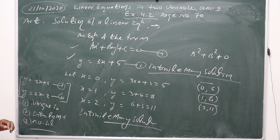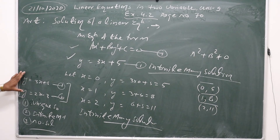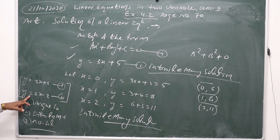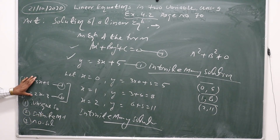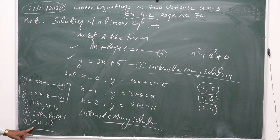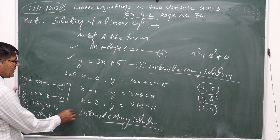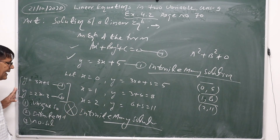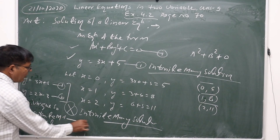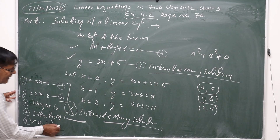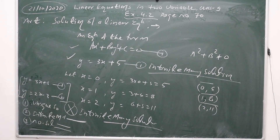In Class 10, Chapter 3, we will discuss these three conditions for the pair of linear equations. Graphically: if there is a unique solution, the lines will intersect; if there are infinitely many solutions, the lines will coincide; and if there is no solution, the lines will be parallel.